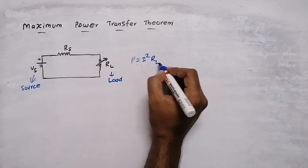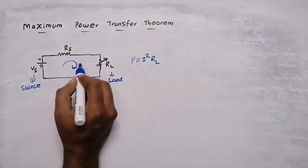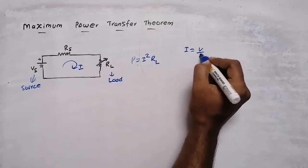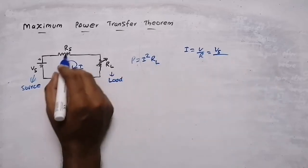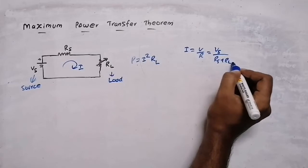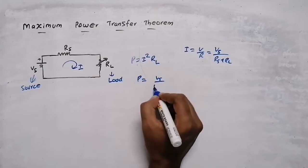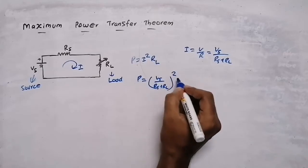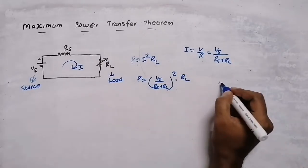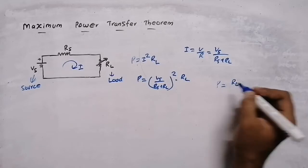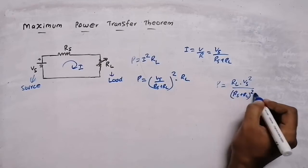For the load resistor, I am finding the power: I squared R. The value of I — this is a series circuit — so I is V by R, where V is the source voltage, Vs divided by R, the total resistance, that is Rs plus Rl. Now power equals I squared into Rl, so power will be equal to Rl into Vs squared divided by (Rs plus Rl) squared.